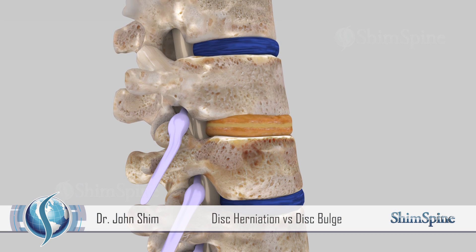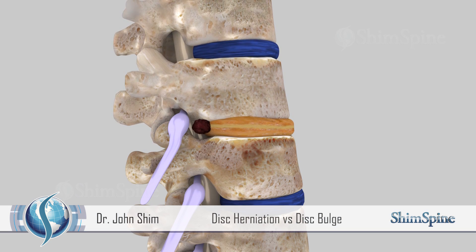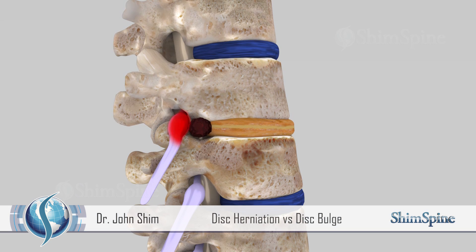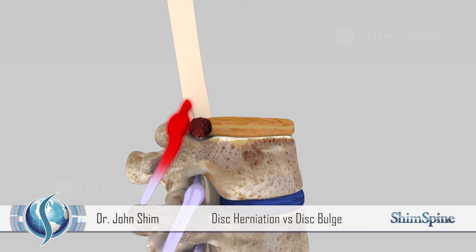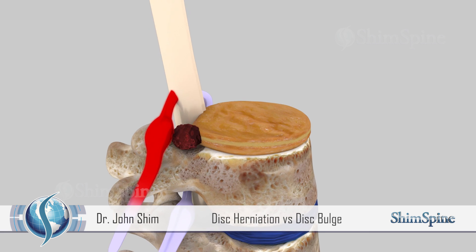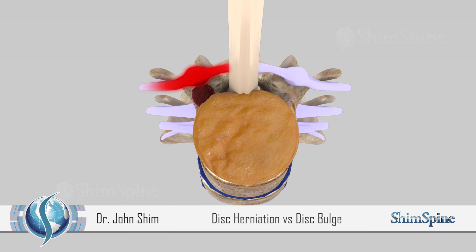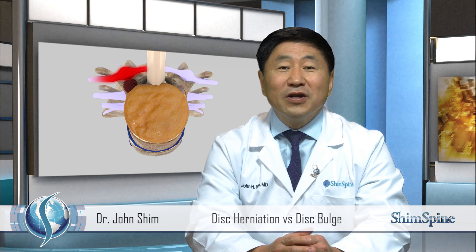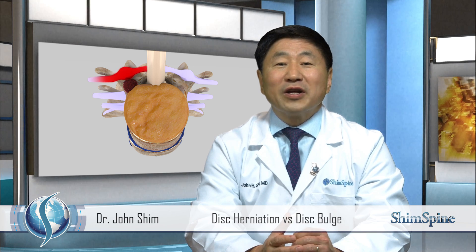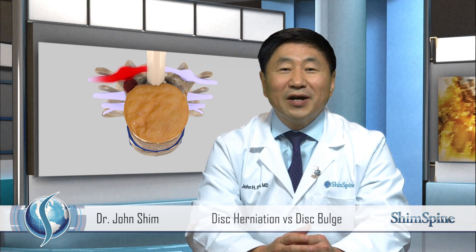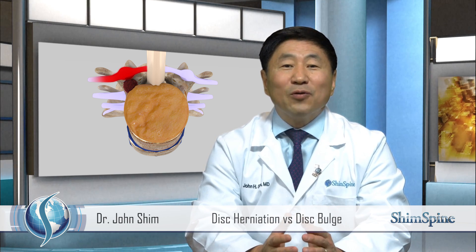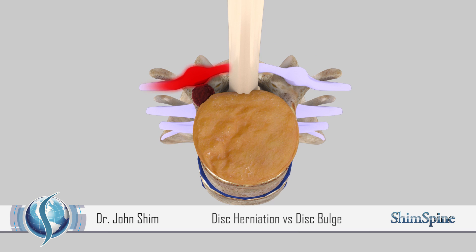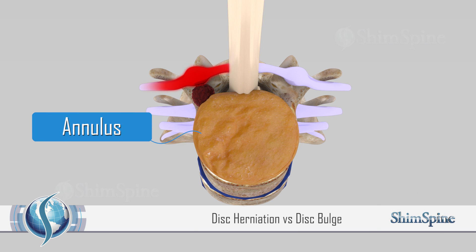If you press on the disc, sometimes the disc herniation center — the nucleus — will come out the side walls and cause herniation, or expression of the jelly outside the outer wall of the disc, or as we would call it, the annulus.